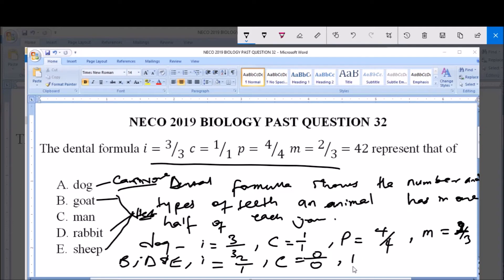P = 3/2. In one half of the upper jaw they have 3 premolars, and in one half of the lower jaw they have 2 premolars. And M, molar, = 3/3. In one half of the upper jaw they have 3 molars, and in one half of the lower jaw they have 3 molars.